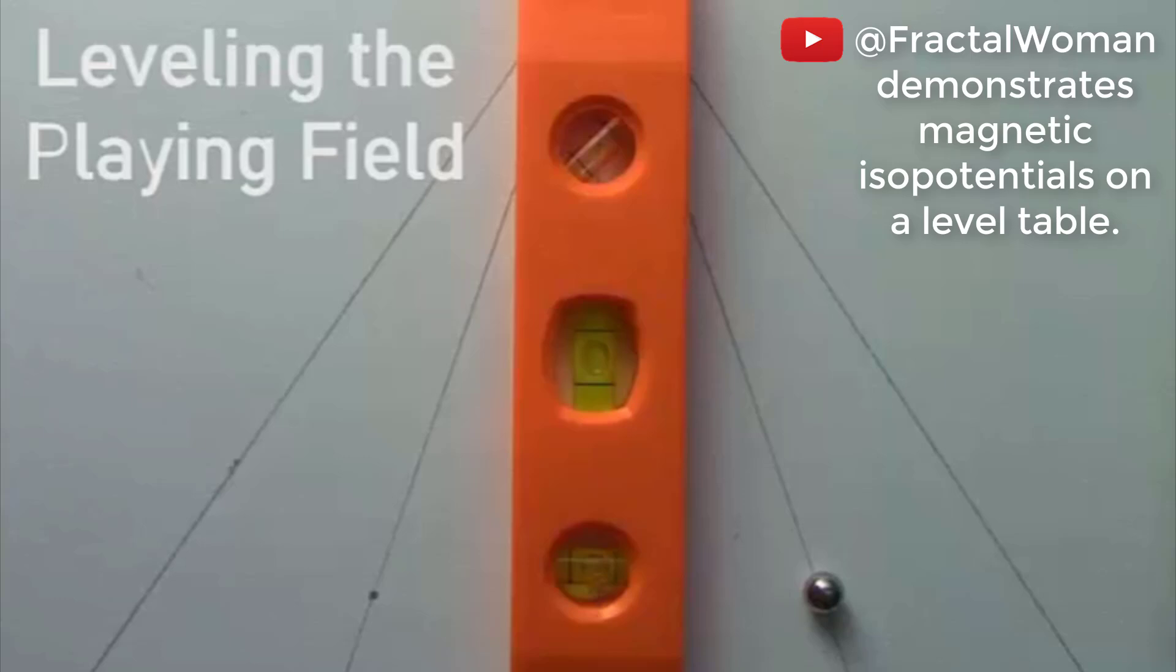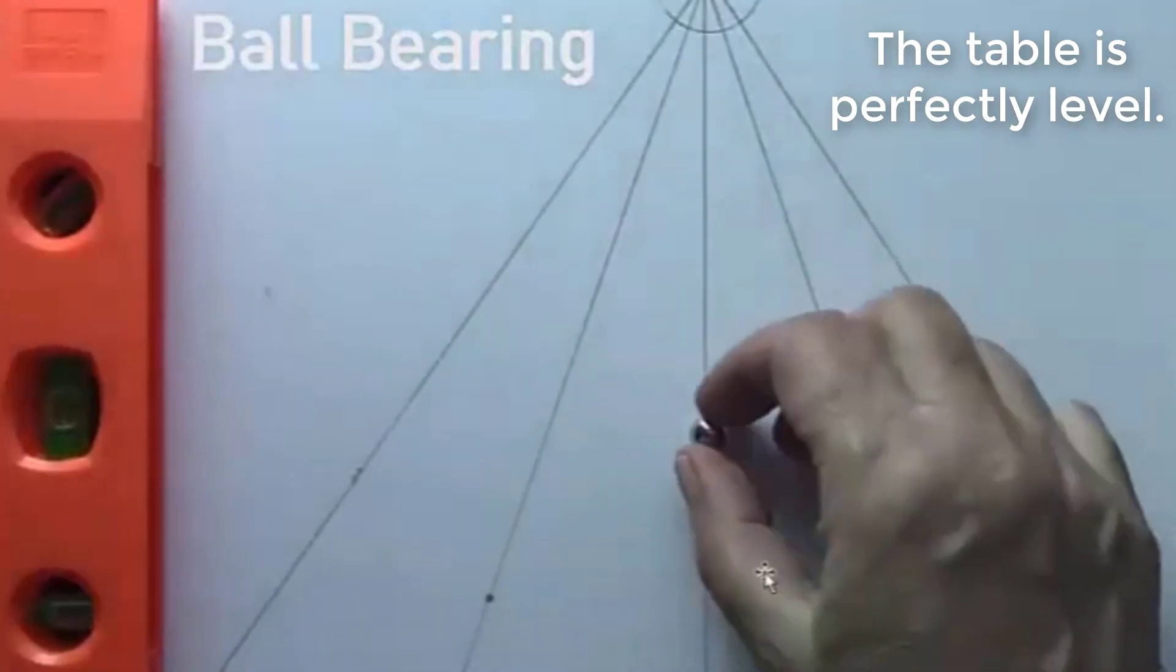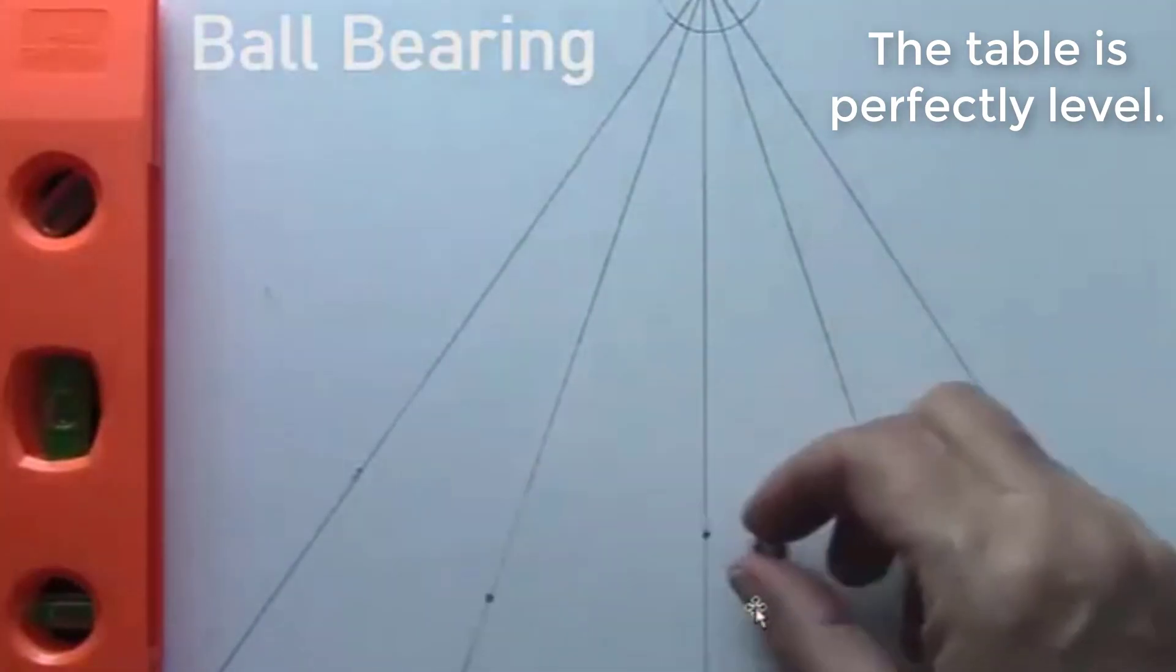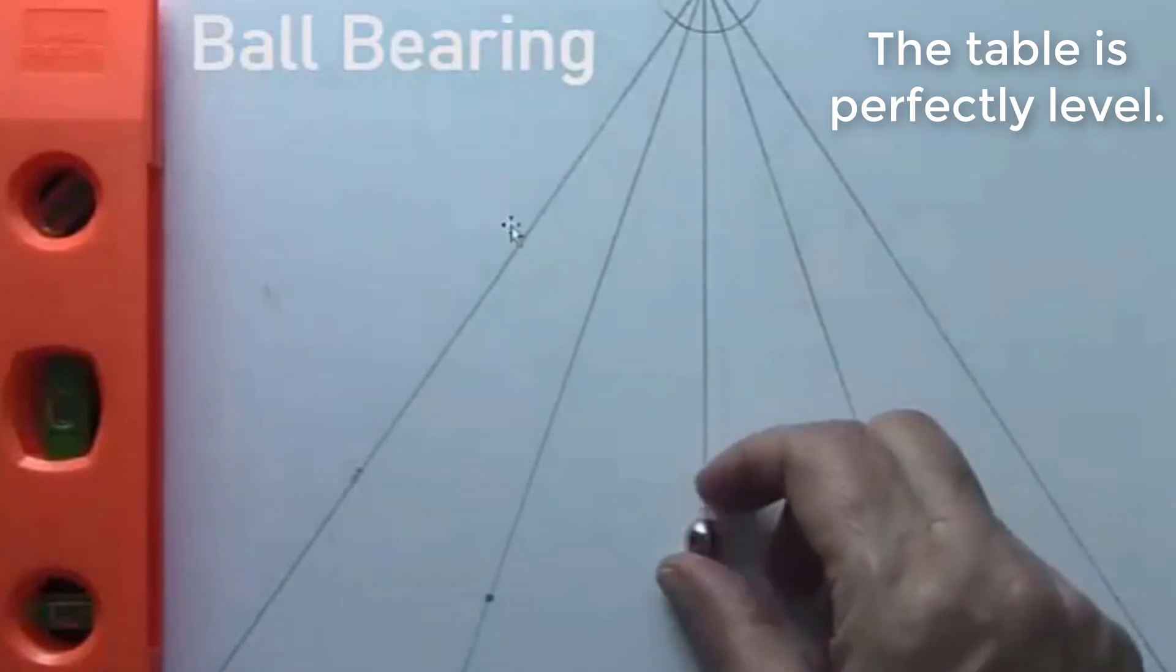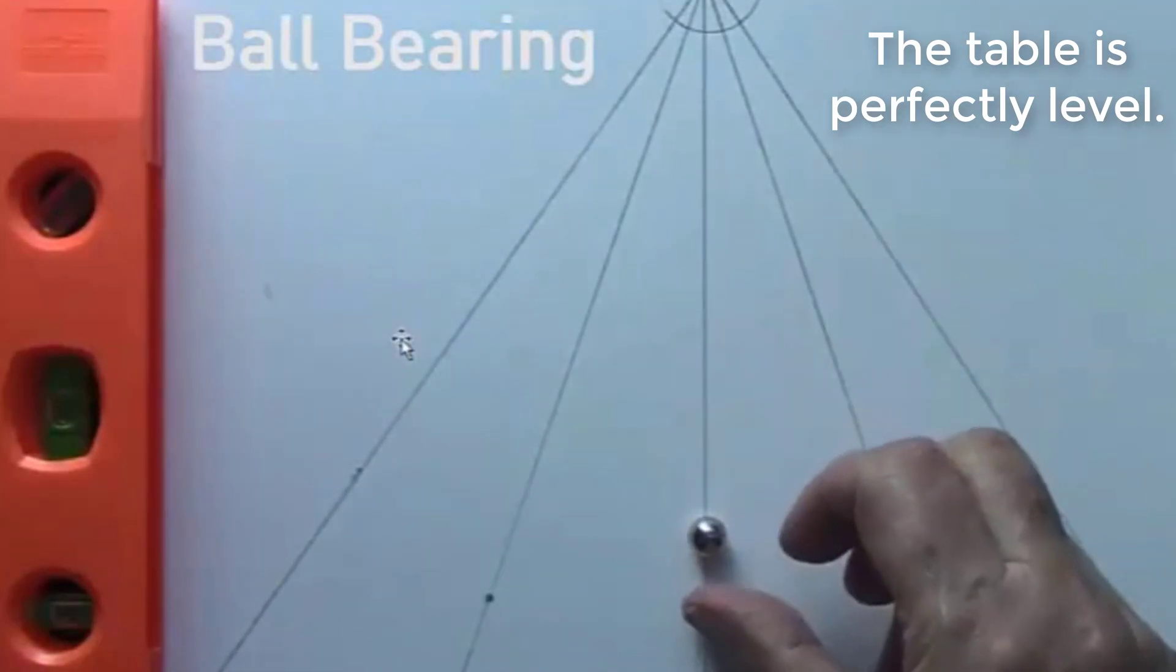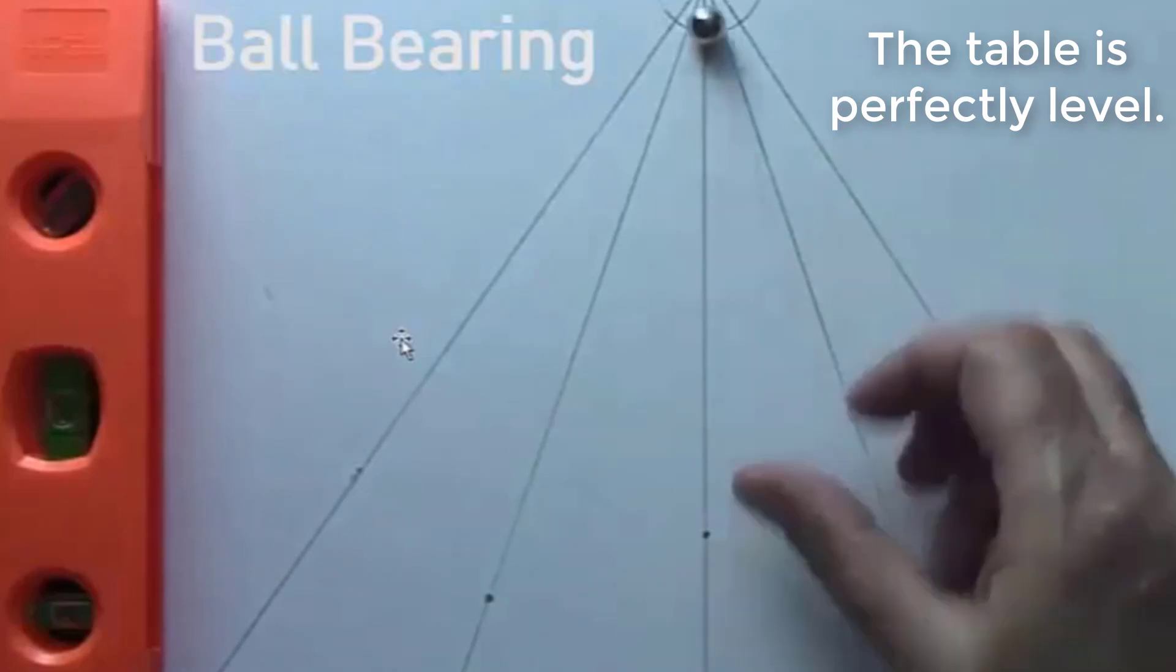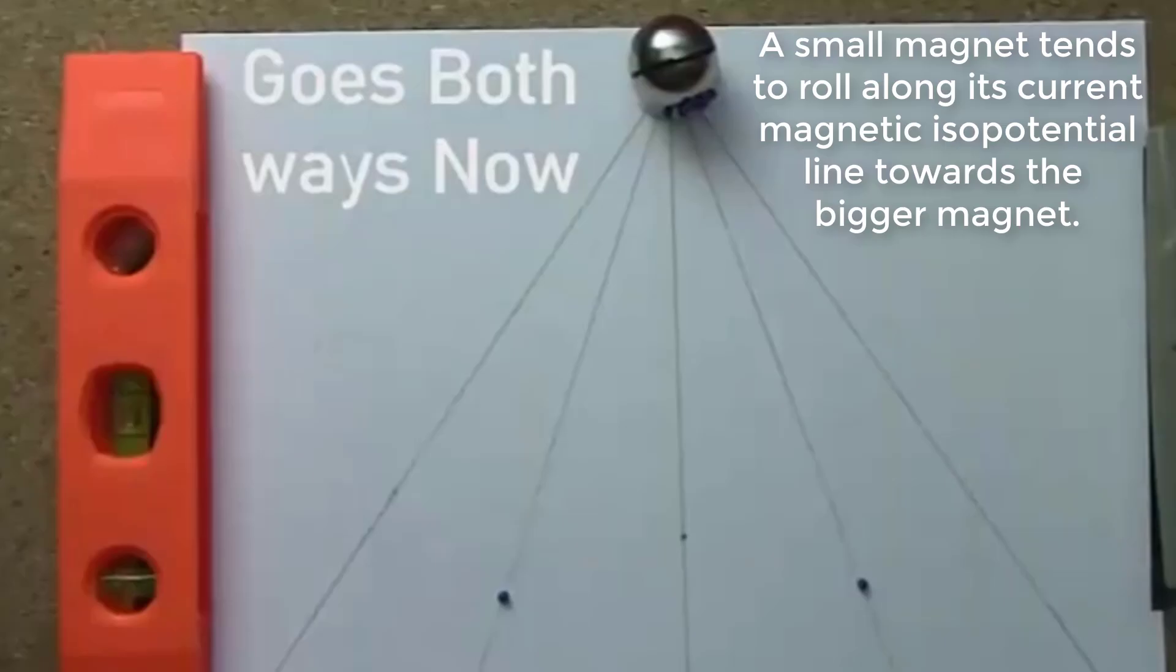Fractal Woman demonstrates magnetic isopotentials on a level table. The table is perfectly level. A small magnet tends to roll along its current magnetic isopotential line towards the bigger magnet.